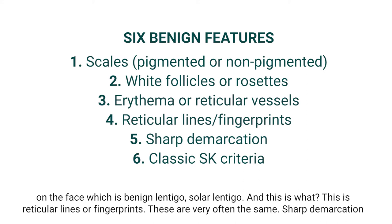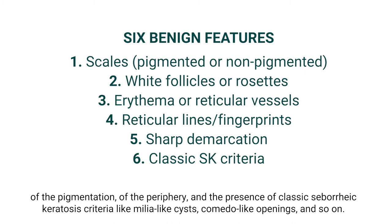The last three criteria are seen in the second main differential diagnosis on the face, which is benign lentigo or solar lentigo. These are: reticular lines or fingerprint-like structures (very often the same), sharp demarcation of the pigmentation at the periphery, and the presence of classic seborrheic keratosis criteria like milia-like cysts, comedo-like openings, and so on.